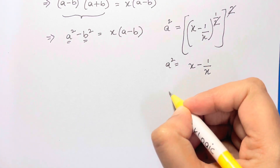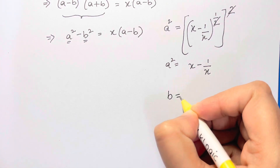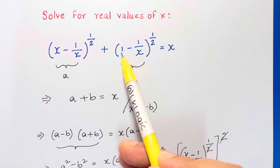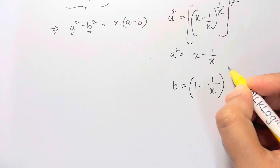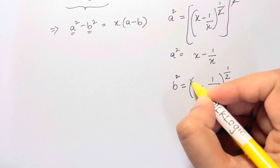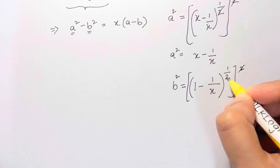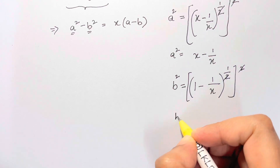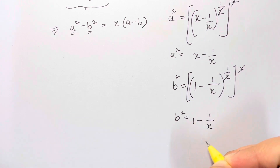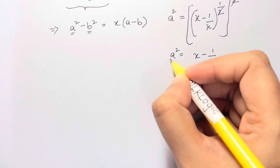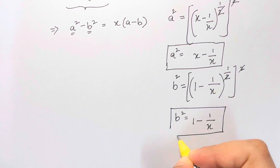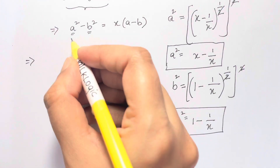Similarly, b is equal to (1 minus 1 over x) to the power of half. We square both sides, and the exponents 2 and 2 cancel out, so b squared is equal to 1 minus 1 over x. Now let's substitute our a squared and b squared into the equation.